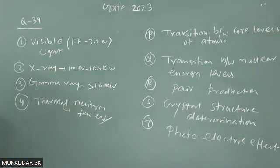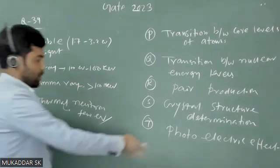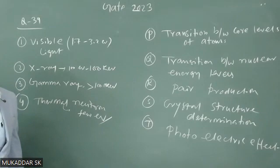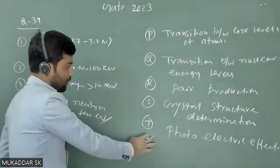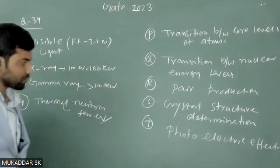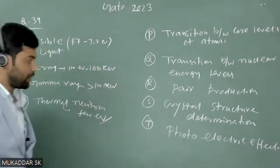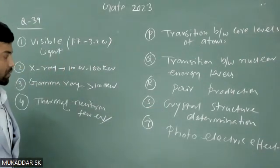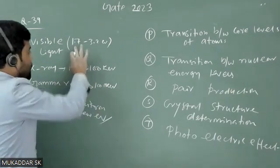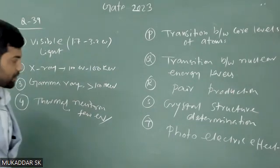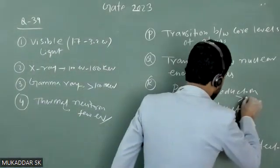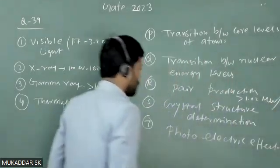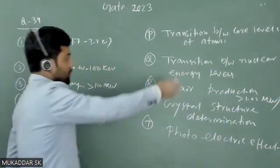To perform the photoelectric effect, we need energy of around one electron volt order, and that is available with visible light. So visible light can do the photoelectric effect. However, it cannot do crystal structure measurement — for that we need energy values much higher than what visible light provides. The same is true for pair production, which requires at least 1.02 mega electron volts.